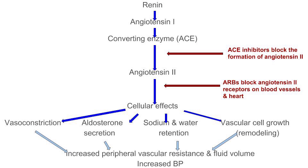Angiotensin II receptor blockers, or ARBs, have very similar effects to ACE inhibitors and are also used for hypertension, heart failure, and post-MI. However, their mechanism of action is very different. Instead of inhibiting the formation of angiotensin II as ACE inhibitors do, ARBs compete with angiotensin II for tissue binding sites and block the angiotensin II receptors on blood vessels and the heart, causing a decrease in arterial blood pressure by decreasing systemic vascular resistance. ARBs are as effective as ACE inhibitors in the management of hypertension and heart failure. They have a low incidence of side effects and do not cause a persistent cough or hyperkalemia. Patients with bilateral renal artery stenosis should not be given ARBs or ACE inhibitors because they both can lead to renal failure in that particular patient.